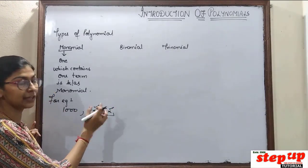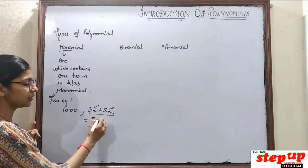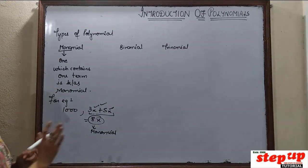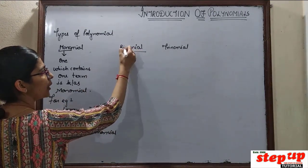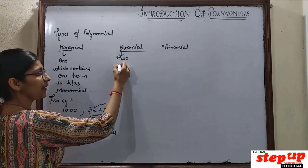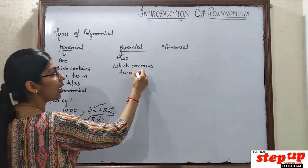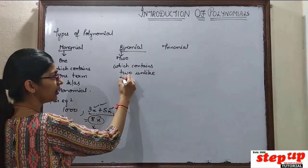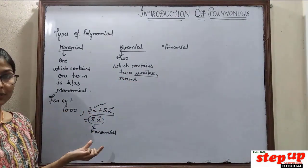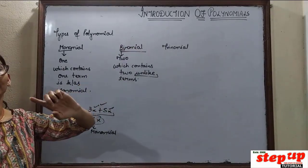Some might say this is binomial, but it is not binomial. Because both variables are the same. Same variables combine together — whatever sign they have, they operate accordingly. If it's plus, then 3x plus 5x equals 8x. So this term you will never call binomial. Binomial — bi means two. Which contains two unlike terms is known as binomial. It is important to write 'unlike' — not just 'two terms.'